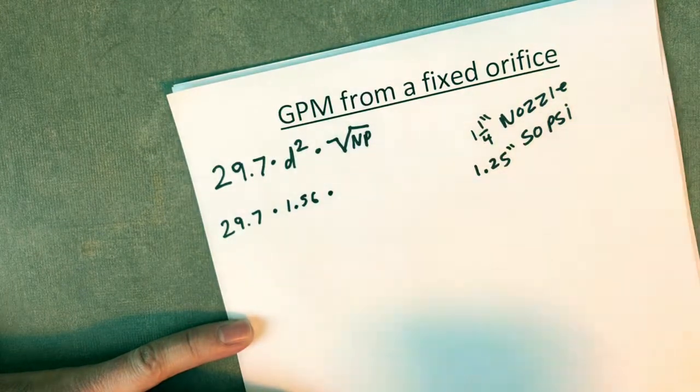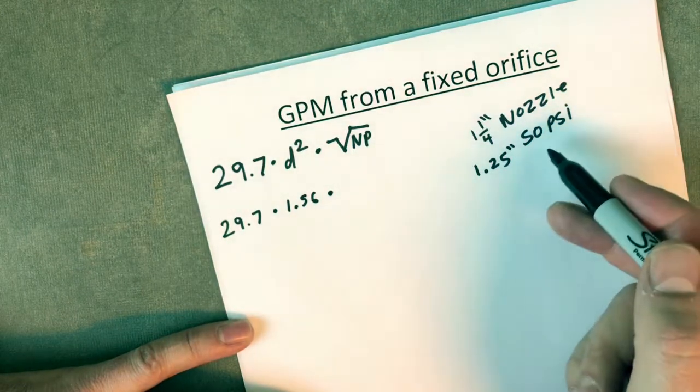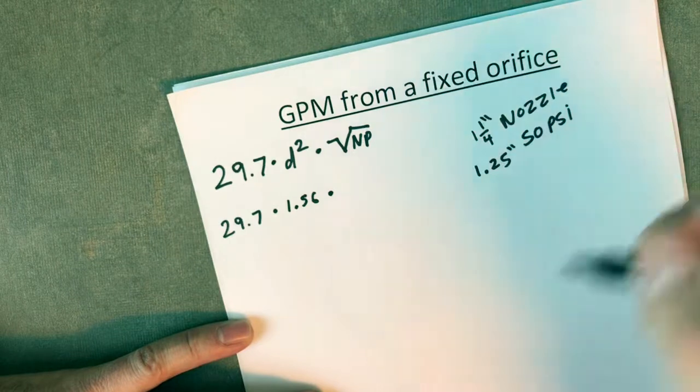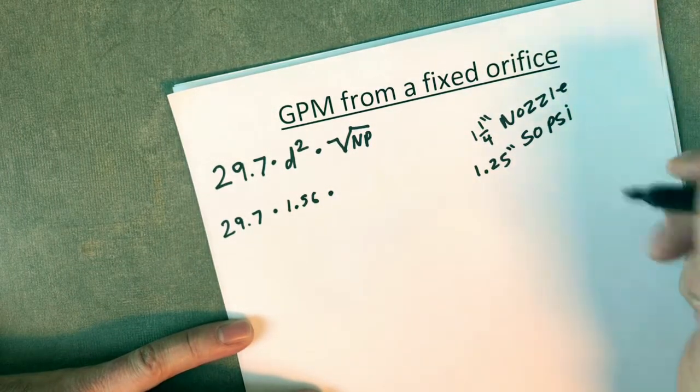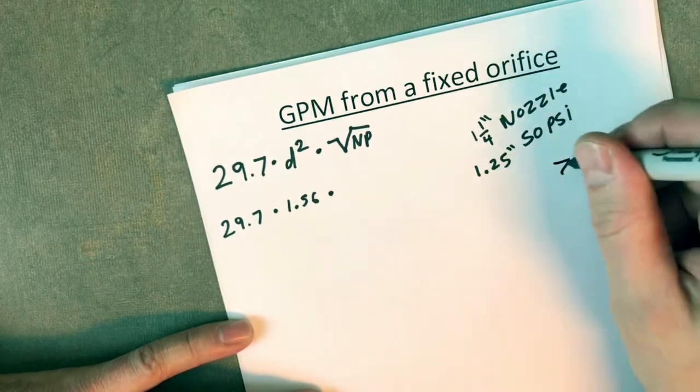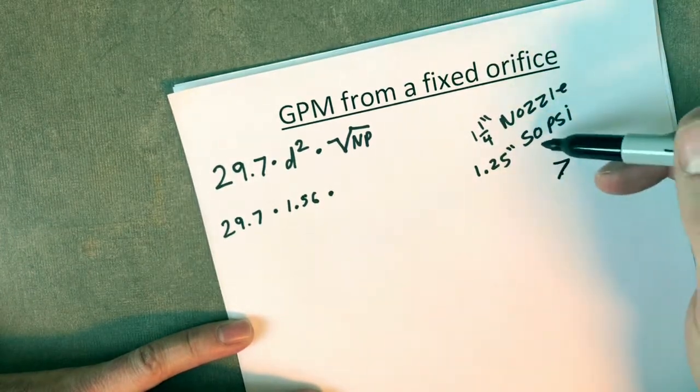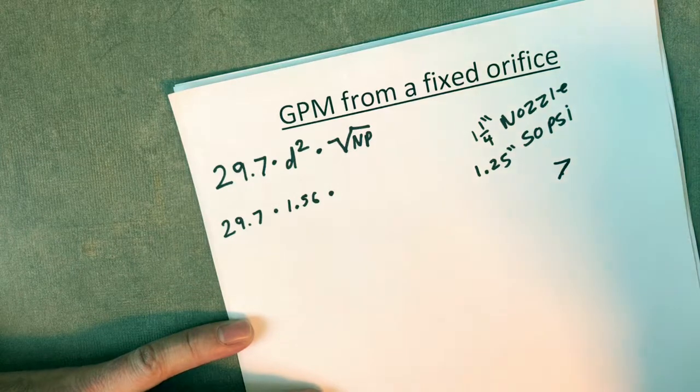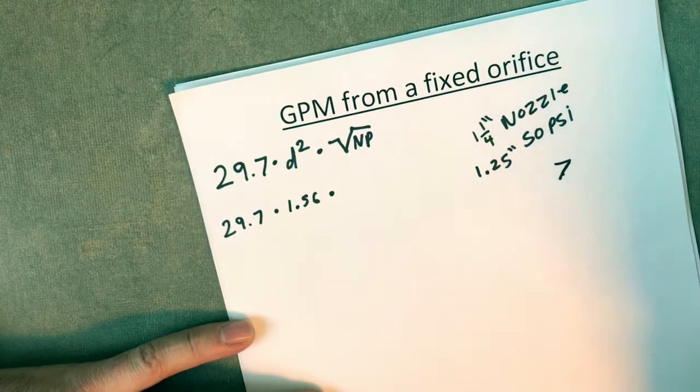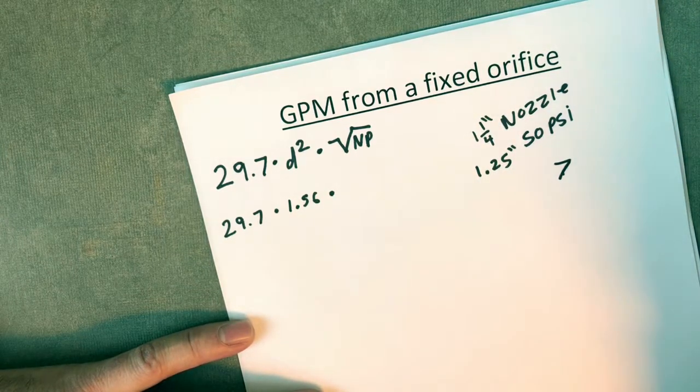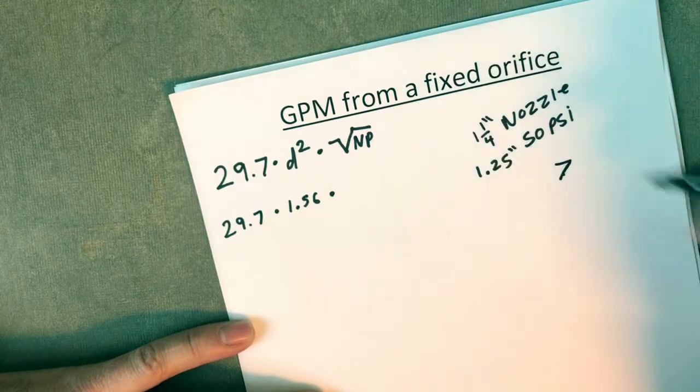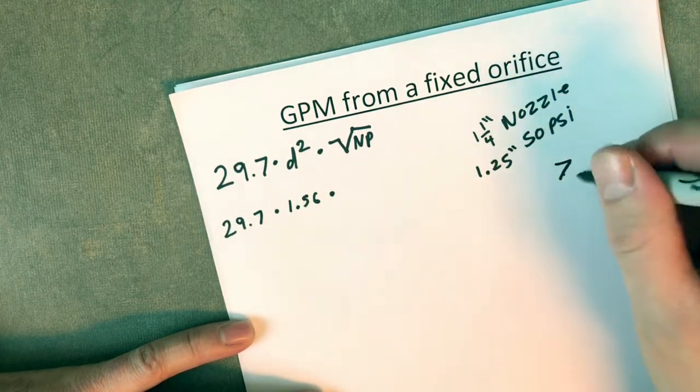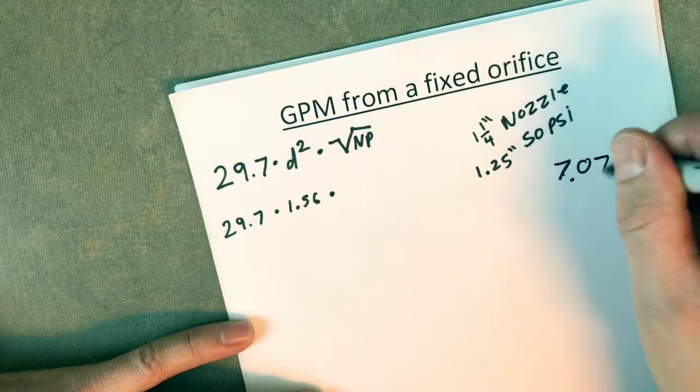Times the square root of the nozzle pressure, 50 psi. If you're doing an engineer's exam, be super accurate with your numbers. If you're just doing field calculations, you could use 7. 7 times 7 is 49, gets you close enough. But if you're taking a test, actually use the correct numbers. Carry it out a couple decimal places. The square root of 50 is 7.07.